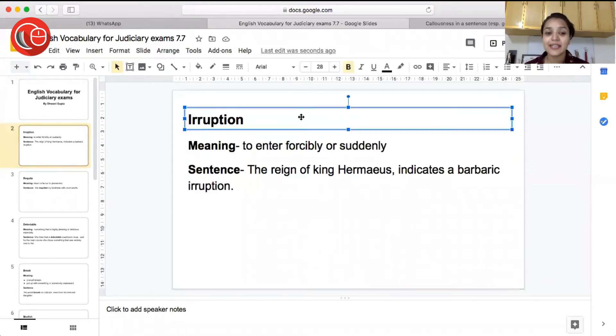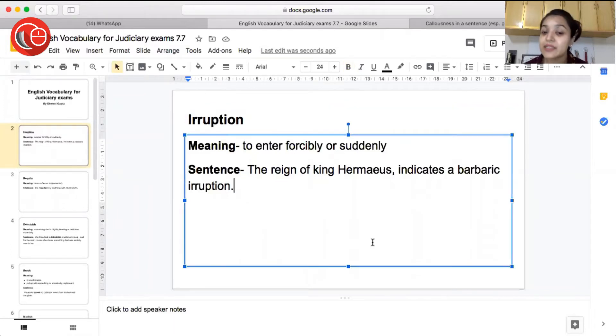So the first word for the day is eruption, meaning to enter forcibly or suddenly. So when you enter by force, that is called eruption. Sentence: the reign of King Hermes indicates a barbaric eruption. So when King Hermes came to power, ascended the throne, then it indicated the forceful entry of barbaric tribes.